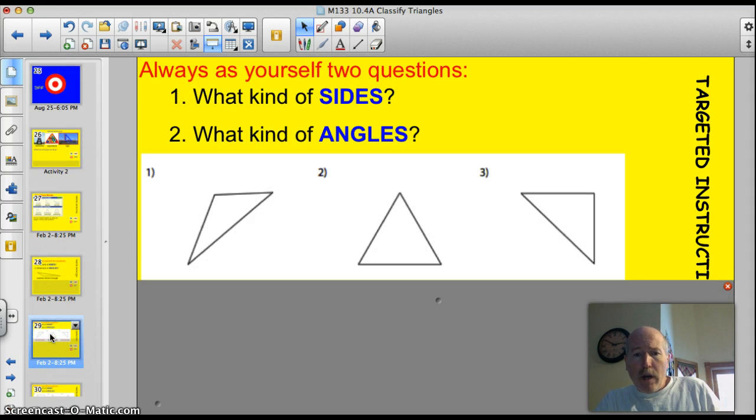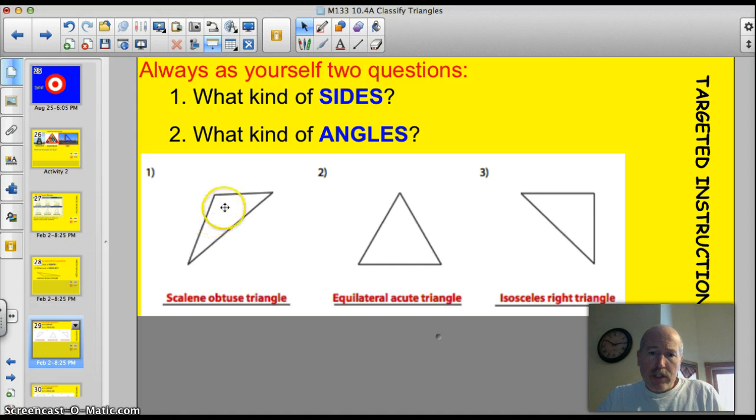Take a look at triangle number one, two, and three. See if you can figure out what they are. Triangle number one, this is a scalene triangle. All sides are different and obtuse, because it has one obtuse angle. This one here is an equilateral triangle. All sides are equal. That means all angles are going to be equal too. So, equilateral and acute. 60, 60, and 60. And we'll be practicing that tomorrow night. Triangles always have 180 degrees when you add up the angles. This one here is an isosceles triangle, because it has two sides that are the same. And it is also a right triangle, because it has one right angle.